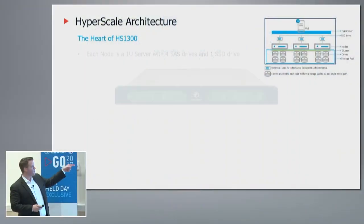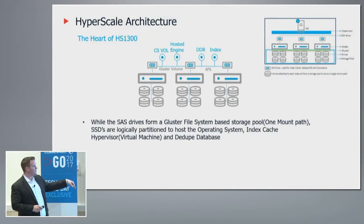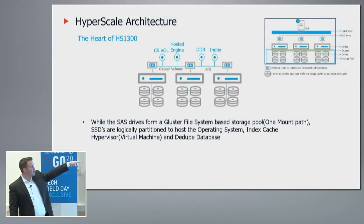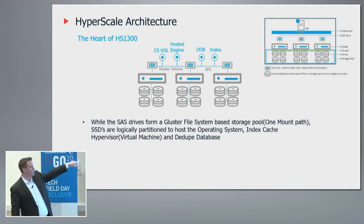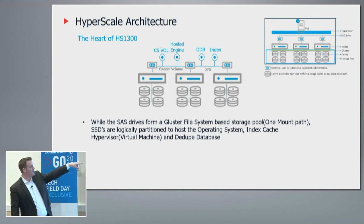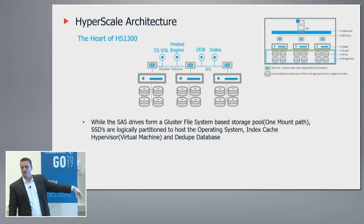So when you take that setup — one server, four SAS drives, one SSD drive — the Commvault hosted engine for driving the master server is stored in Gluster, going through our HEV. XFS is used for the DDB indexes, and that goes across the solid-state disks.